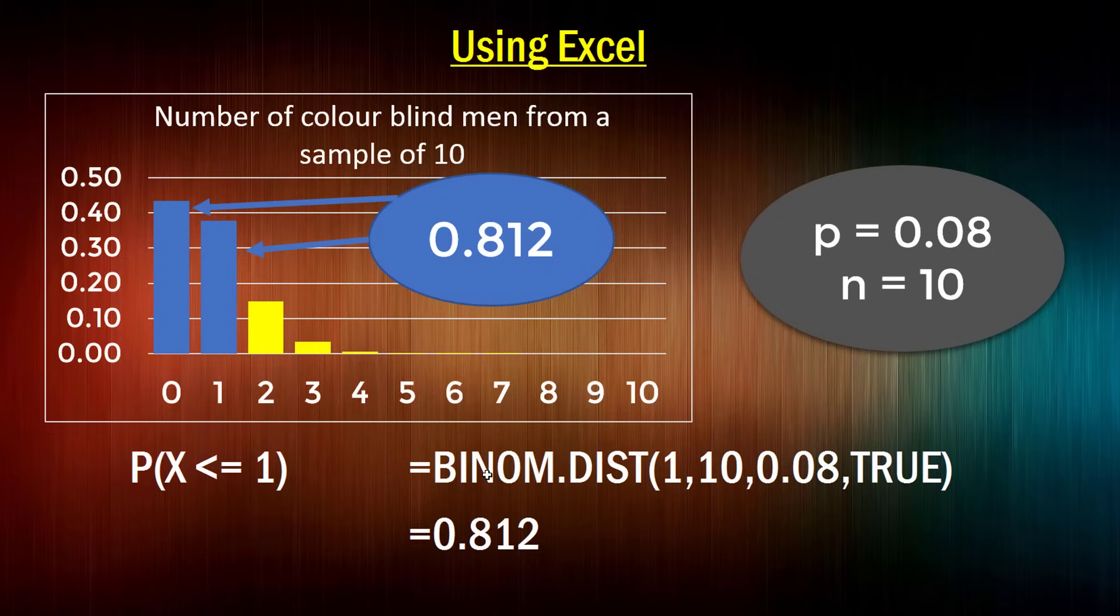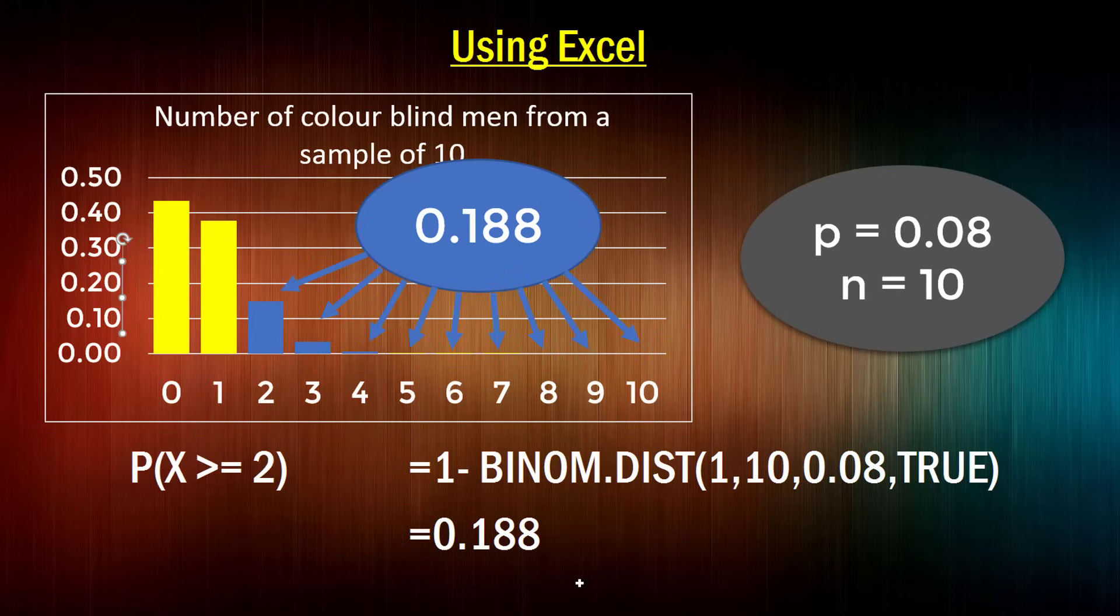Now if you're curious as to what happens when you write true instead of false in that final argument, well, that'll give for you the cumulative distribution function at that point. And when I say that, I mean the probability of getting that value or less. So if I'm trying to find the probability of x being less than or equal to one, I can write equals binom.dist and I'll put a one in there. Again, make it 10 and 0.08 because they're the parameters of this binomial distribution. And by writing true, it's going to give me the probability of just these first two outcomes. That's x being zero and one. If I wrote false, it'd just give me the probability of x being one.